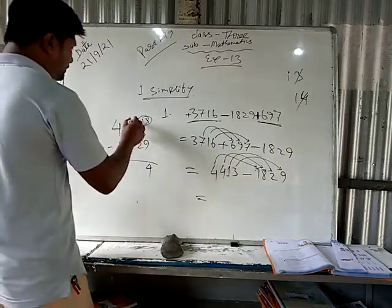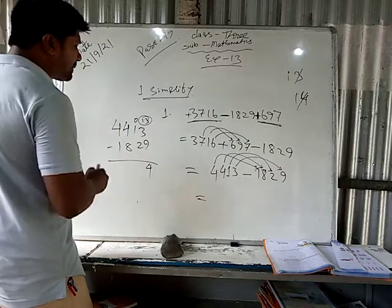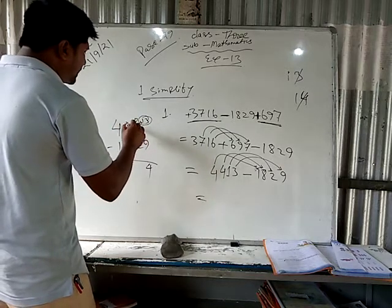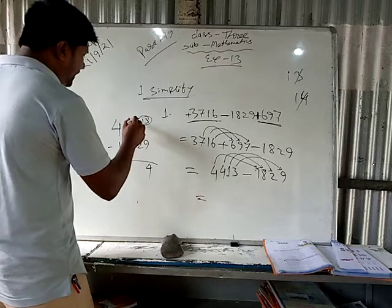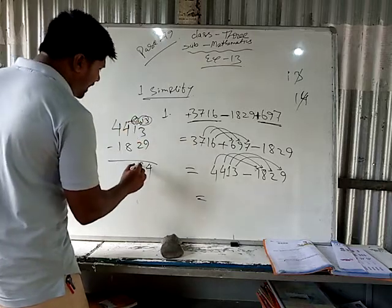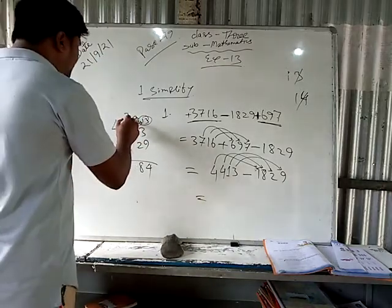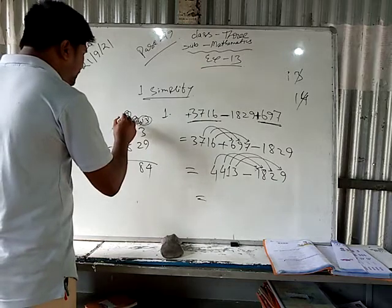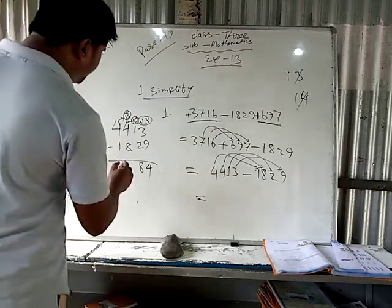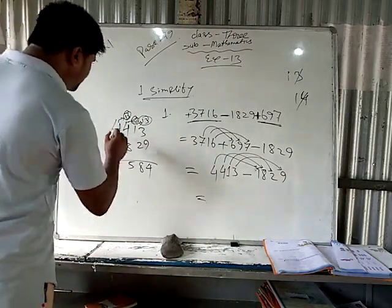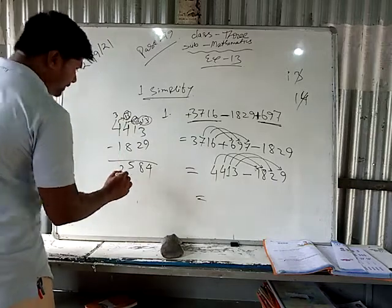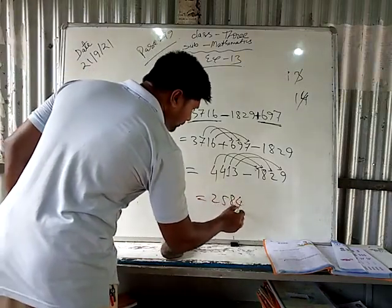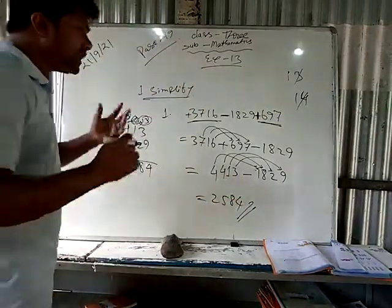We take one, so it becomes ten. Ten minus two is eight. In the hundreds place, three minus eight is not possible, so we borrow: 13 minus 8 is 5. In the thousands place, three minus one is two. So the answer is 2584.